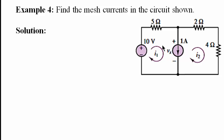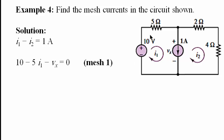For example four, we define mesh currents I1 and I2. The circuit has a current source between meshes I1 and I2, so the constraint equation is I1 minus I2 equals 1 ampere. The direction of I1 is the same as the direction of the current source, whereas I2 is opposite, which is why I1 gets a positive sign and I2 a negative sign. Applying KVL around mesh one gives: 10 minus 5·I1 minus Vx equals zero.